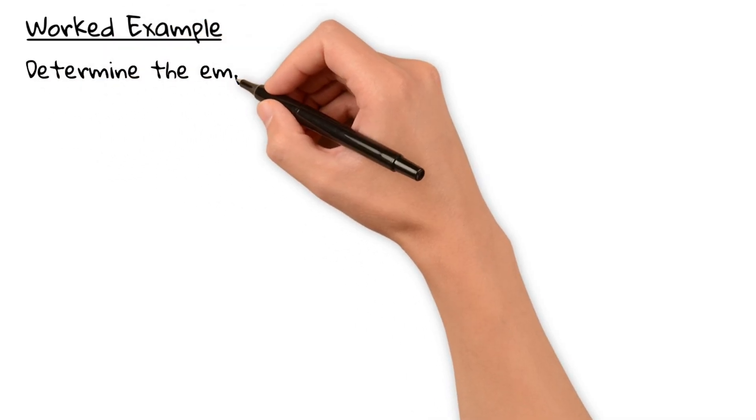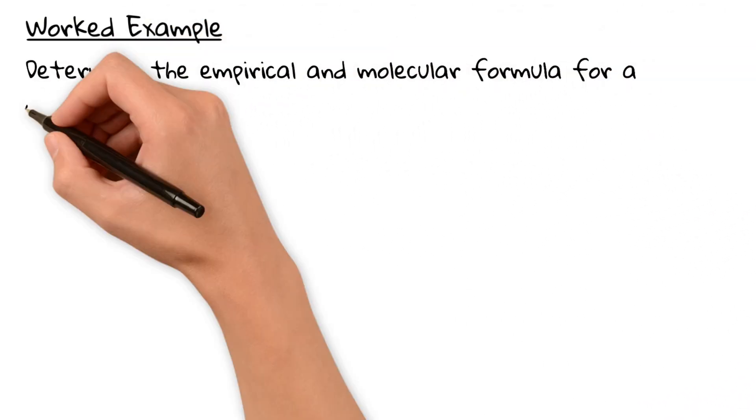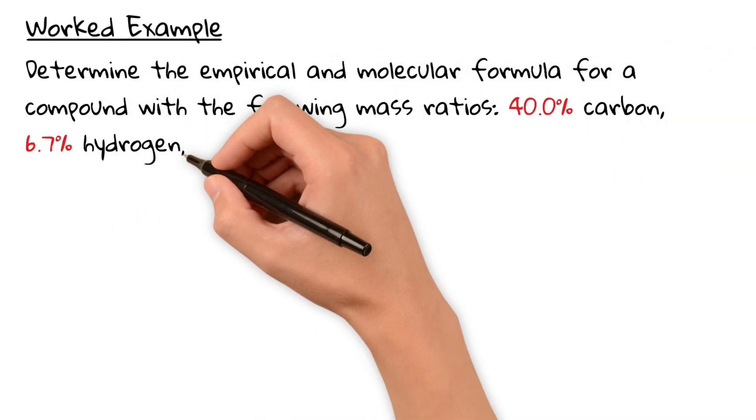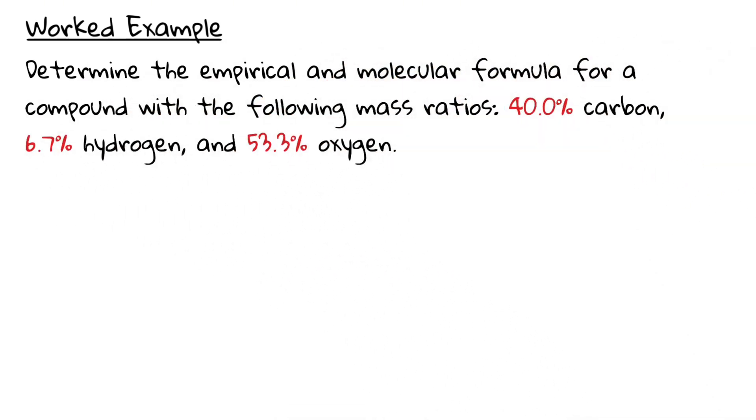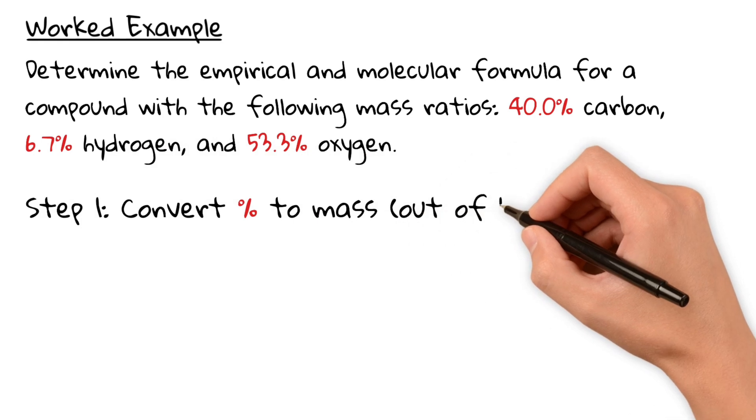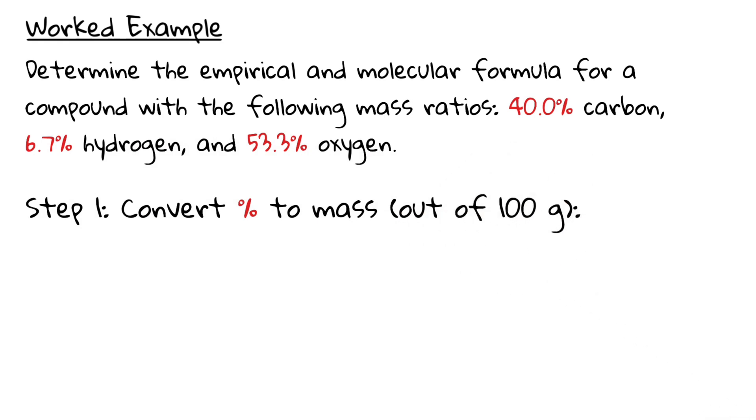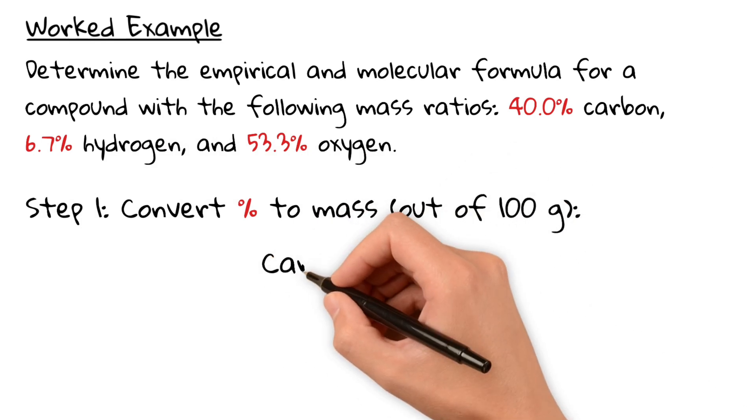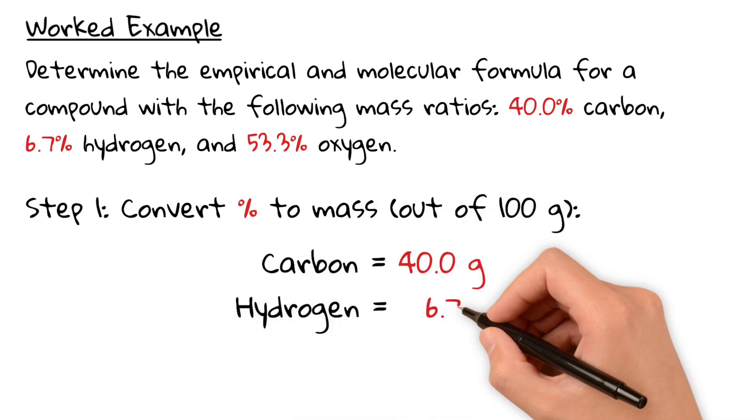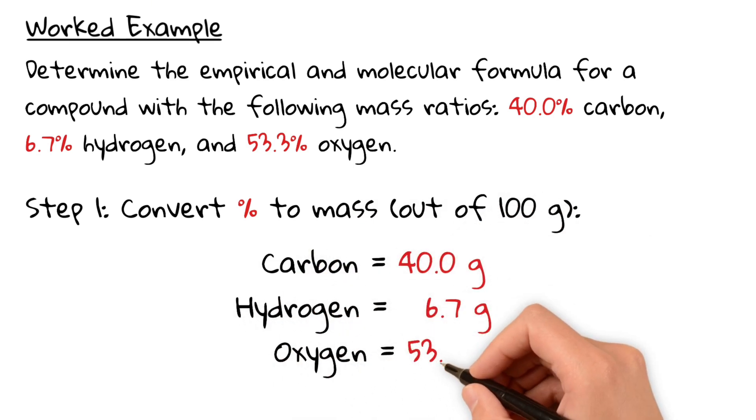Determine the empirical and molecular formula for a compound with the following mass ratios: 40% carbon, 6.7% hydrogen, and 53.3% oxygen. As a first step, we simply rewrite each percentage as a mass in grams. So we are assuming 40 grams of carbon, 6.7 grams of hydrogen, and 53.3 grams of oxygen.